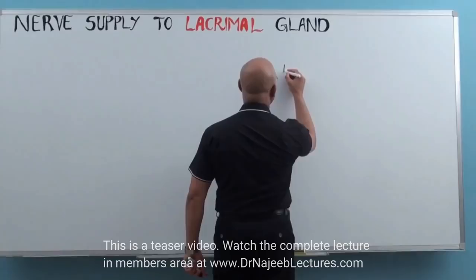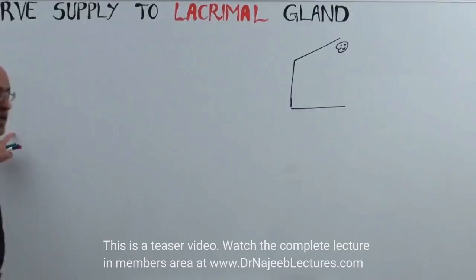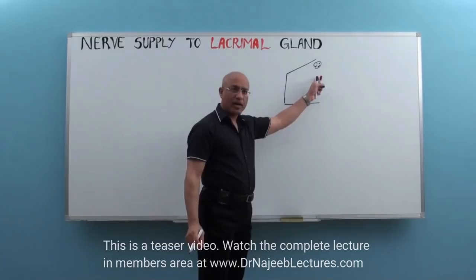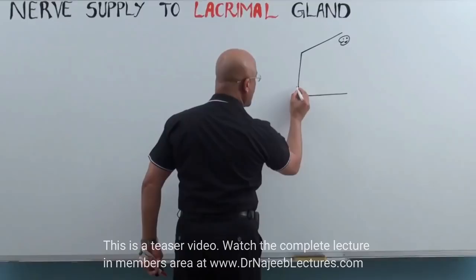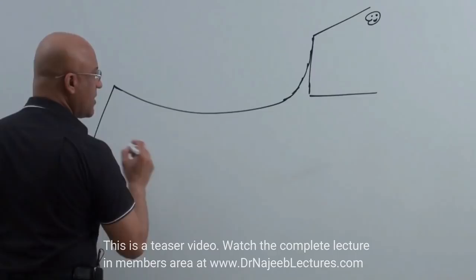Let us start with a very basic diagram. Here is your orbit and here is your lacrimal gland, and we have to take the nerve supply from the central nervous system up to the lacrimal gland. Other important parameters I would draw here: middle cranial fossa. Let us suppose here is your middle cranial fossa.